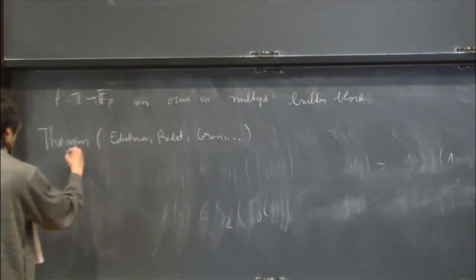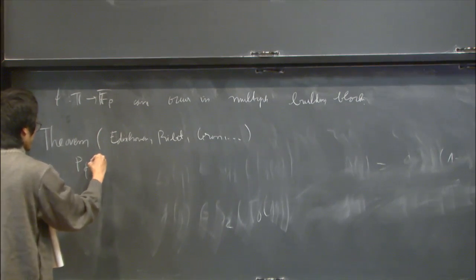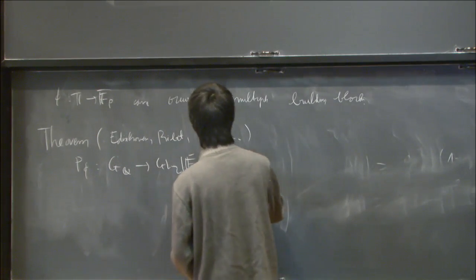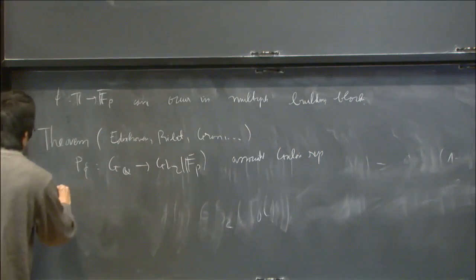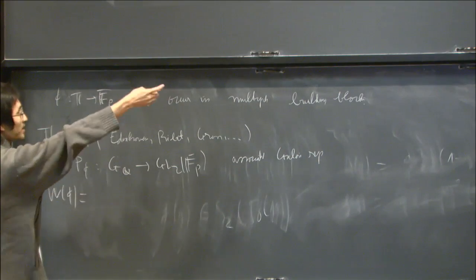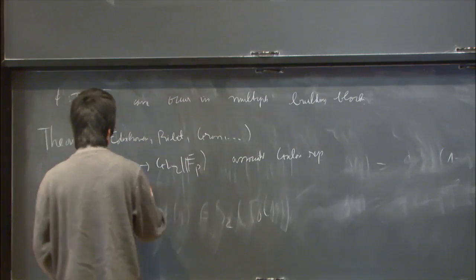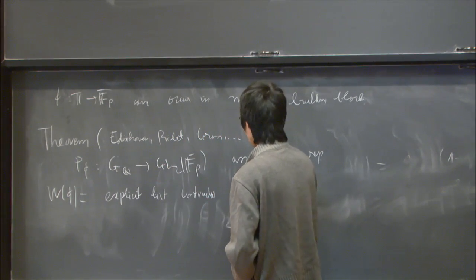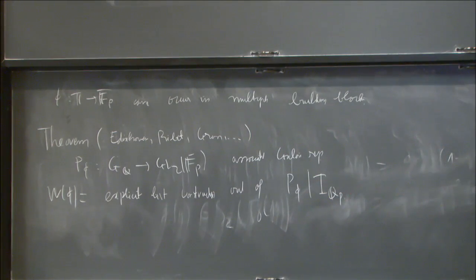And this is given by the classical theorem due to the work of many people, Deligne, Serre, Ribet, Gross, and so on. And basically, the answer is that a system of Hecke eigenvalues that occurs in the cohomology of the arithmetic group will have an attached Galois representation. In this case, it's two-dimensional. And the list of Serre weights for which the system shows up is given by an explicitly constructed list, constructed out of a very tiny piece of this Galois parameter. Out of, namely, just the restriction of this Galois parameter on inertia at p.